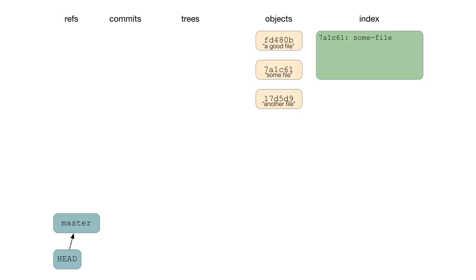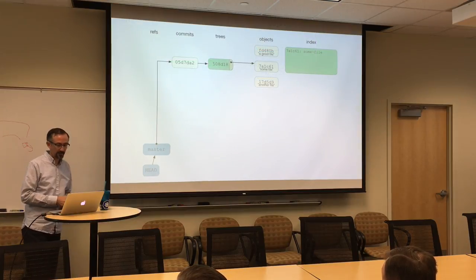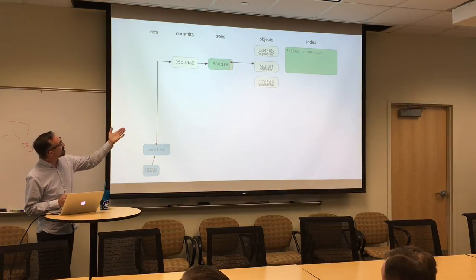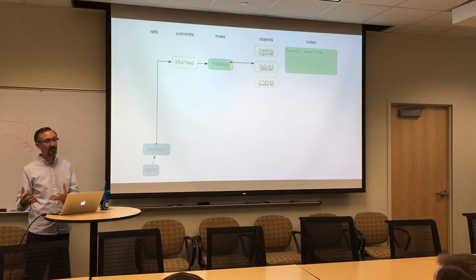Now if we cat .git/HEAD, it'll still point to master. But if we cat refs/heads/master, it should point to your first commit. Let's look at that commit using 'git cat-file -p' — it's amazing, you can use it on anything in the .git directory. You should have a tree with hash 508D. Everyone has the 508D tree, which means you've done it exactly as instructed — the contents of the directory and files are all the same. You'll have a different author and committer. So when we make a commit, we go from a collection of objects with no ordering to this structure. The commit object's very first line points to a tree.